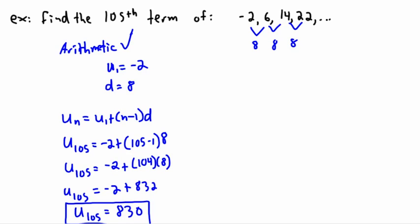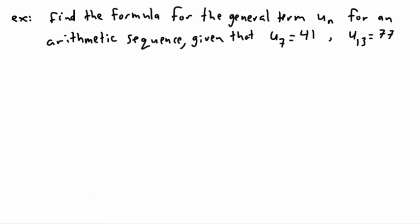Now, what we can do is get even more complicated. So here, find the formula for the general term, un, for an arithmetic sequence. So here you're told it's arithmetic. Given that u7 is 41, u13 is 77. But there's a problem here. Look, we're looking for un. And un is u1 plus n minus 1 times d. That's what we want. But what's u1? And what's d?